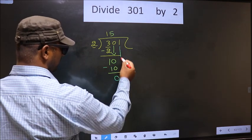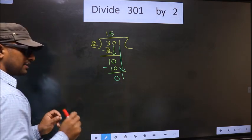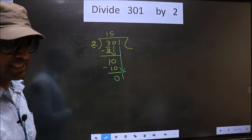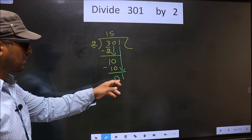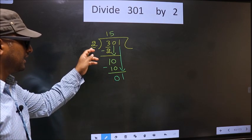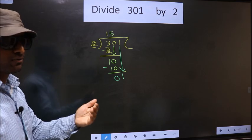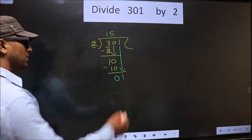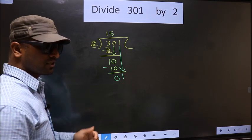Now you bring down the beside number. That is 1 down. And this is where the mistake happens. Here we have 1, here 2. 1 is smaller than 2. So what many do is, they put a dot and take 0 here. Which is wrong.